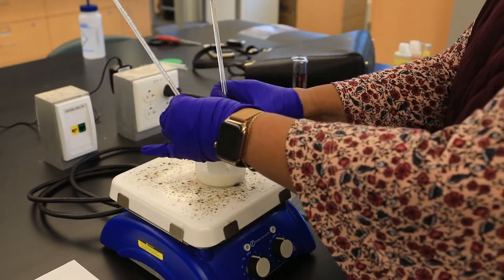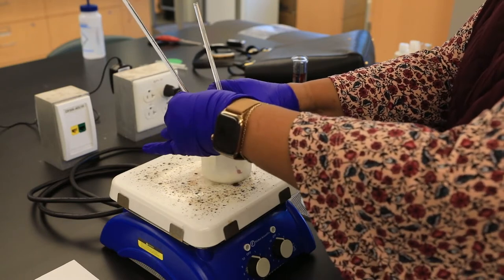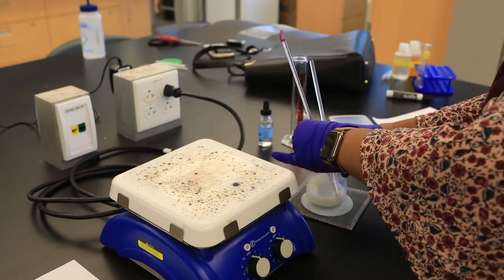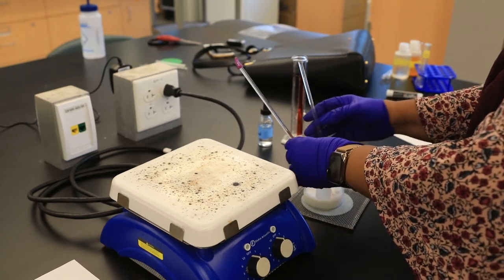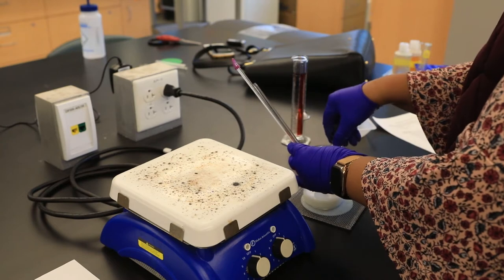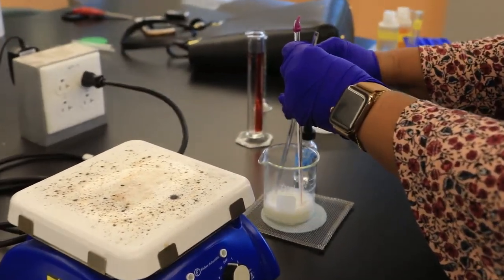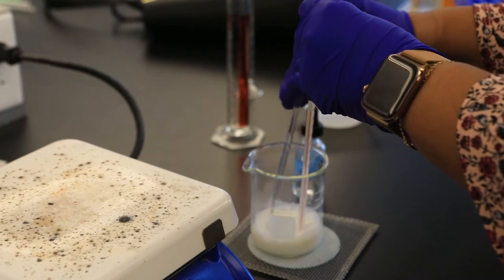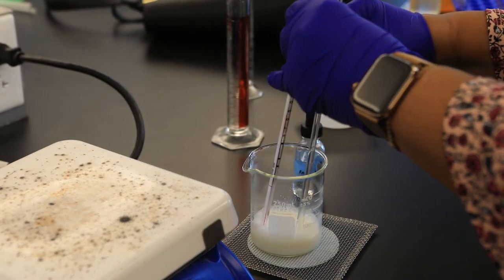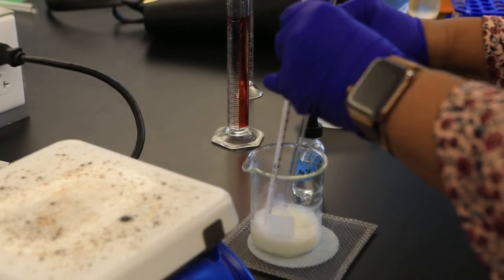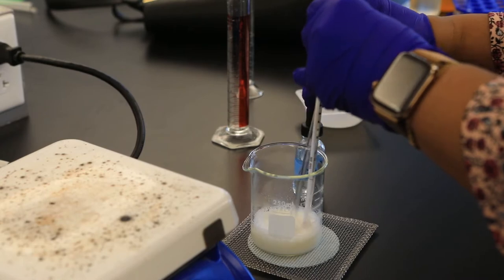Now that our thermometer has reached between 40 and 45 degrees, I'm going to remove it from the hot plate and add acetic acid. The purpose of that acetic acid is to precipitate out casein. As that solid casein is formed, I'm going to move it off to the side in the upper beaker.